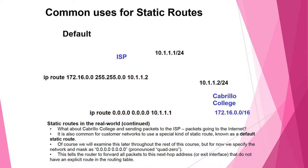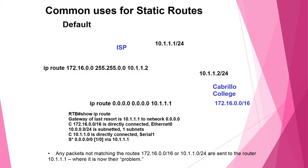It is also common for a customer network to use a special kind of static route known as a default static route. The network and mask are specified as 0.0.0.0 0.0.0.0, which tells the router to forward all packets that do not have a specific route in the routing table to the next-hop address or exit interface. Using 'show ip route', any packet not matching another route will be forwarded to 10.1.1.1 — it is then their problem.